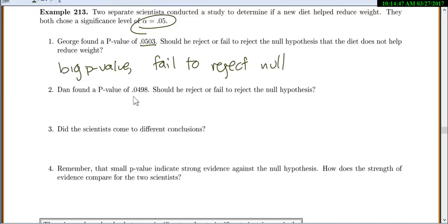But Dan found a p-value of 0.0498. So these are just two separate scientists. They're each doing their own study. They each have different data. So this, 0.0498, is smaller than 0.05. So this is a small p-value. And he gets to reject the null.